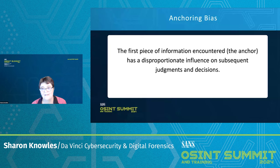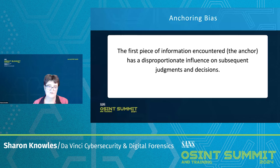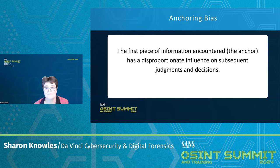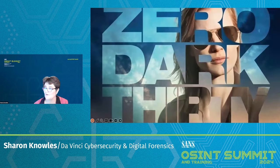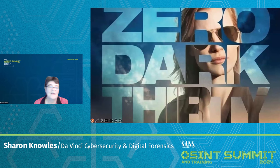Anchoring bias: the first piece of information encountered — known as the anchor — has a disproportionate influence on subsequent judgments and decisions. If an investigator's initial finding is that a specific IP address is associated with malicious activity, they may give undue importance to this even if later evidence points elsewhere. The movie here is Zero Dark Thirty — the investigation into Osama bin Laden's location heavily relied on initial information about his potential courier, potentially creating a narrow focus and missing other critical evidence.